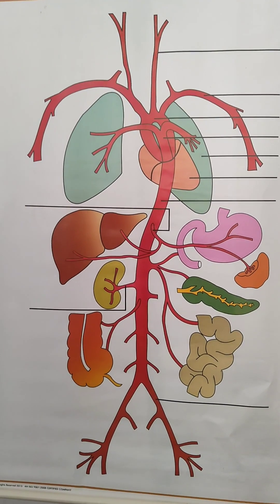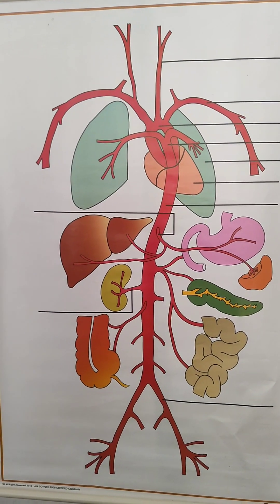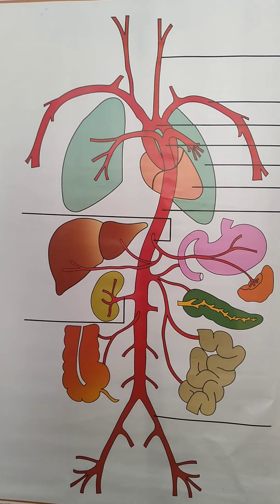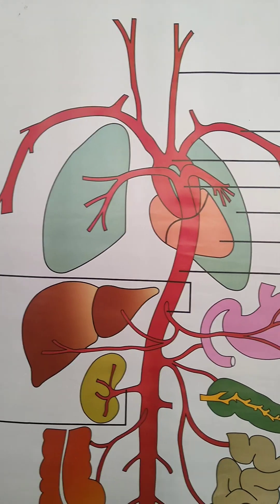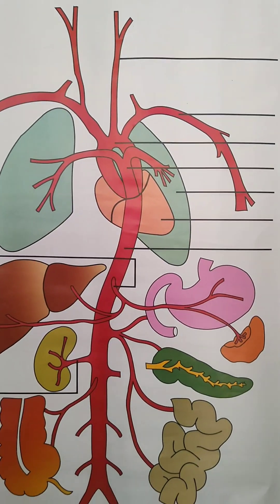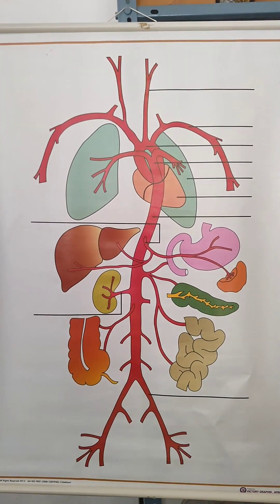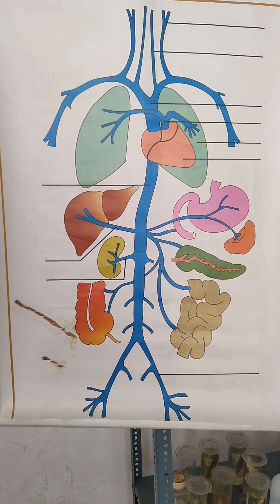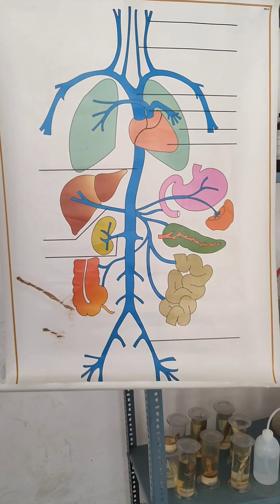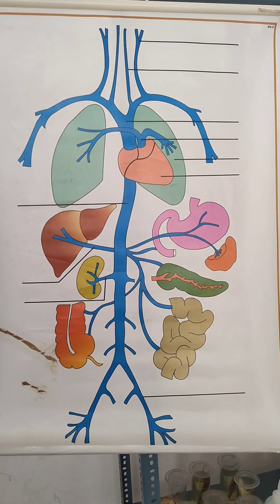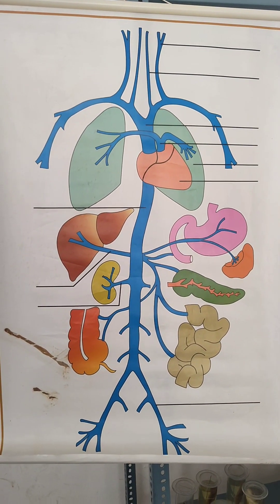Then, human arterial system. Don't get confused — in blue color is the venous system, and in red color is the artery system. Then, this is the human venous system.